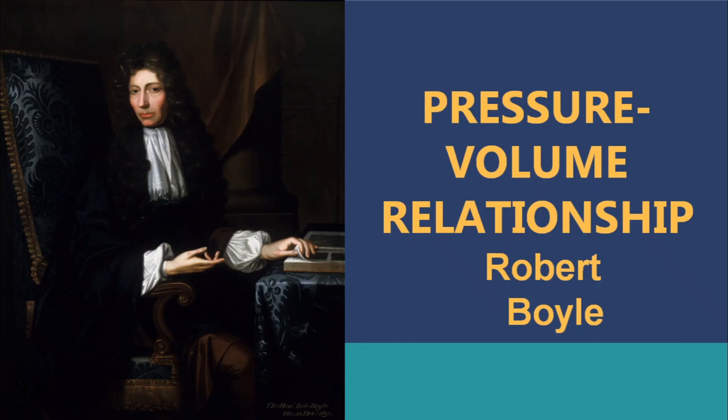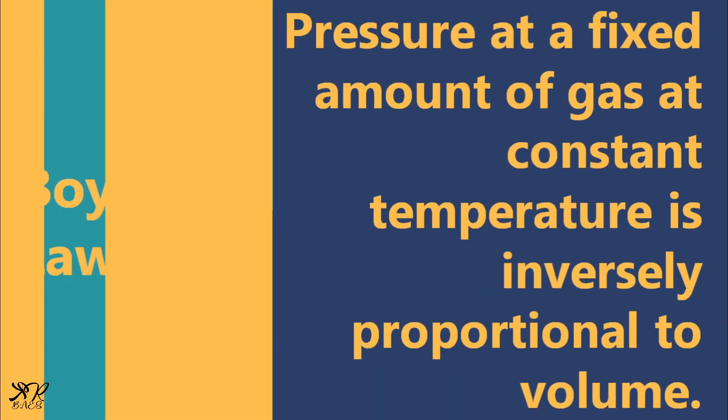His findings showed that whenever another amount of mercury is added to the J-shaped tube apparatus, a new volume and new pressure from the trapped gas is measured. In his observation, he expressed the volume readings in cubic inches and the pressure in inches of mercury. He then proposed Boyle's Law, which states that the volume of a given mass of a gas held at constant temperature is inversely proportional to its pressure.